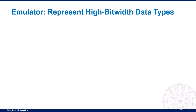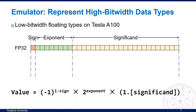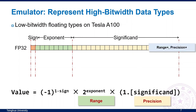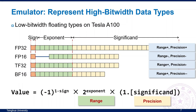I will first introduce the native floating-point types supported by NVIDIA A100. FP32 is a common floating-point type with 1 sign bit, 8 exponent bits, and 23 significant bits. The exponent bits decide the representation range and the significant bits decide the precision, so FP32 has a large range and high precision. FP16 has only 5 exponent bits and 10 significant bits, giving it a narrower range and lower precision. TF32 and BF16 have 8 exponent bits, similar range to FP32, but lower precision. So how can we use these low bit-width types to emulate FP32?